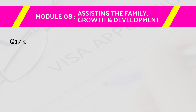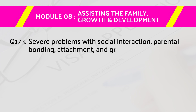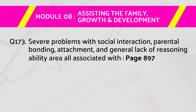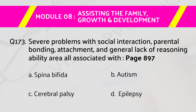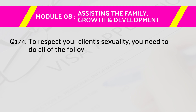Question number 173: Severe problems with social interaction, parental bonding, attachment, and general lack of reasoning ability are all associated with — page number 897. Answers are: A) spina bifida, B) autism, C) cerebral palsy, D) epilepsy. The right answer is B, autism.